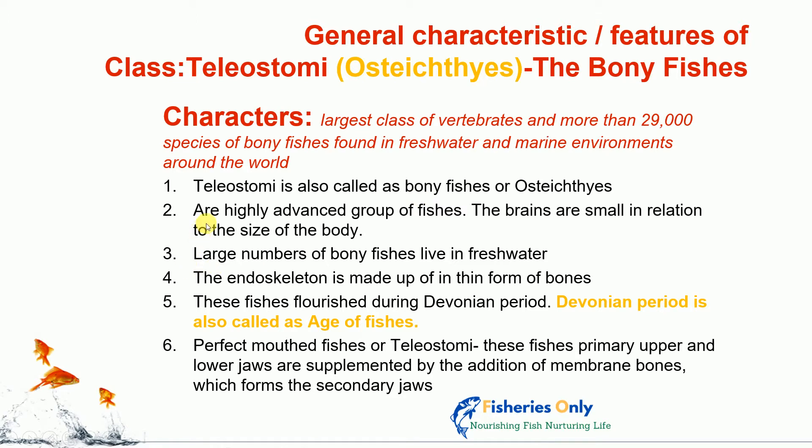Second character: these are a highly advanced group of fishes. The brain of these fishes is small in relation to the body size, but the capacity of the brain to work is higher as compared to the Elasmobranchii and other fishes. The brain size is small but the functional capacity is higher — that is why they are called an advanced group of fishes.